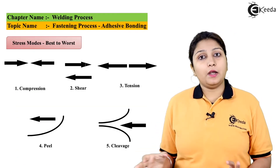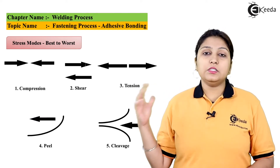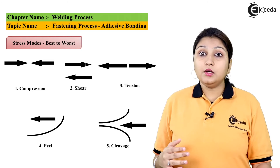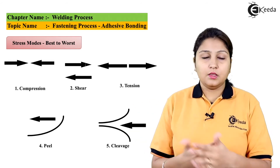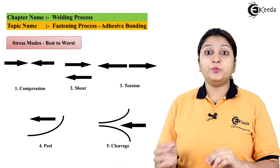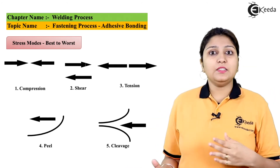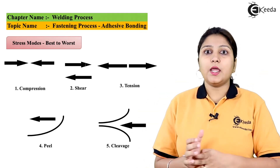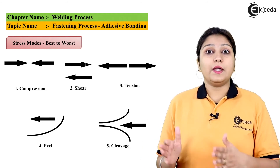If a part is joined by adhesive bonding, certain stresses can occur. There are five types: compression, shear (a part-to-part reaction where pieces slide against each other), tension (where the bond is pulled apart), peeling (where the bonded object is peeled and removed), and cleavage (where material is pushed from between the joint and removed easily).